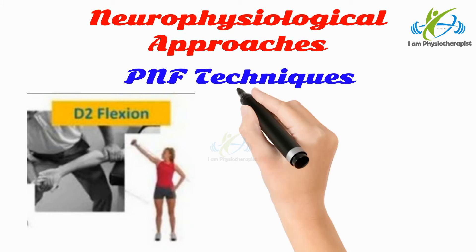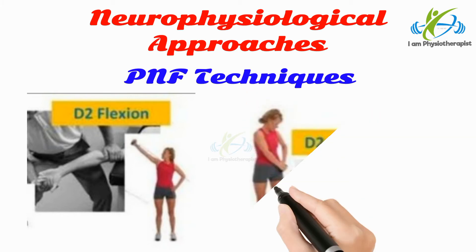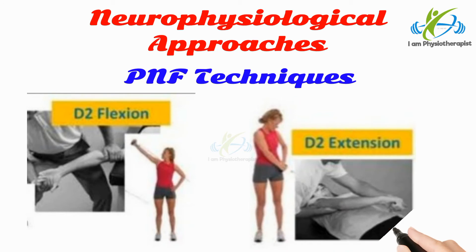D2 flexion includes shoulder flexion, abduction and external rotation, forearm supination, wrist radial deviation and extension, and fingers extension. D2 extension includes shoulder extension, adduction and internal rotation, forearm pronation, wrist ulnar deviation and extension, and fingers flexion.